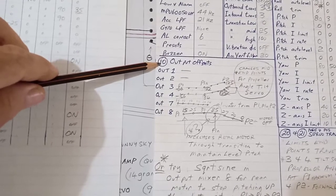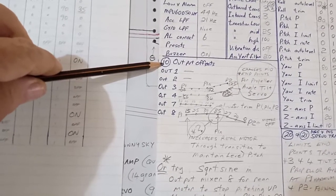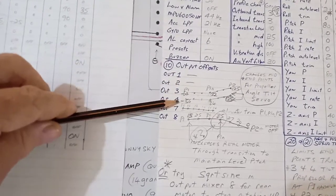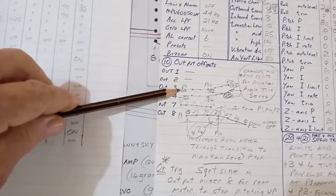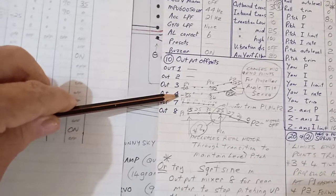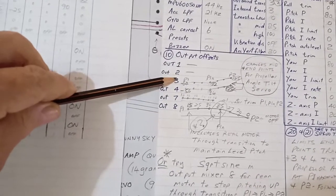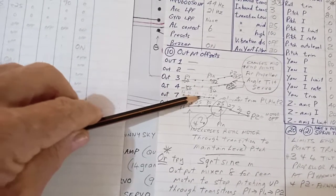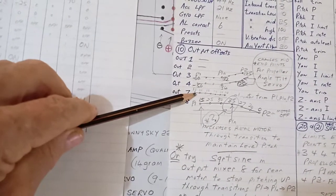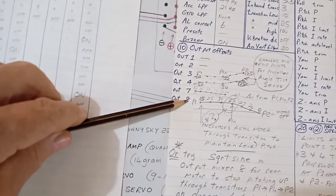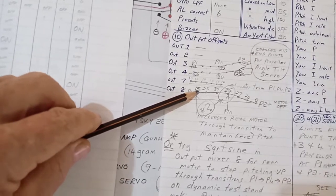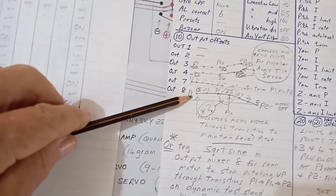Now down here, section 10 has the output offsets. Output offset number three is for a tilt servo, and output four is for the right tilt servo. So that's left and right. Output seven is basically your center trim on your elevator. Output eight is the throttle curve for the rear motor.